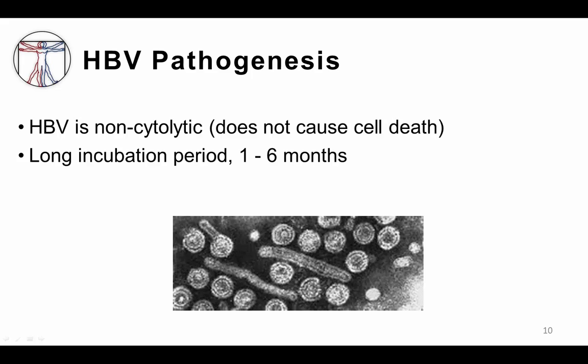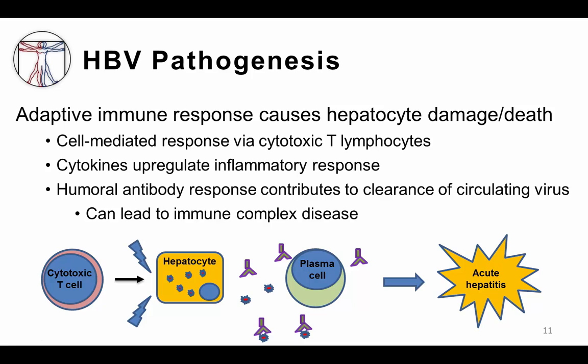Another unique feature of hepatitis B is that it is a non-cytolytic virus, meaning the activity of the virus itself does not cause cell lysis or death. This leads to a longer symptom-free incubation period of between one and six months, during which a person may not know they are infected. Cell damage is instead largely the result of our adaptive immune response, particularly virus-specific cytotoxic T lymphocytes, which kill infected cells and produce antiviral cytokines. It is this robust inflammatory response that produces an acute hepatitis syndrome.